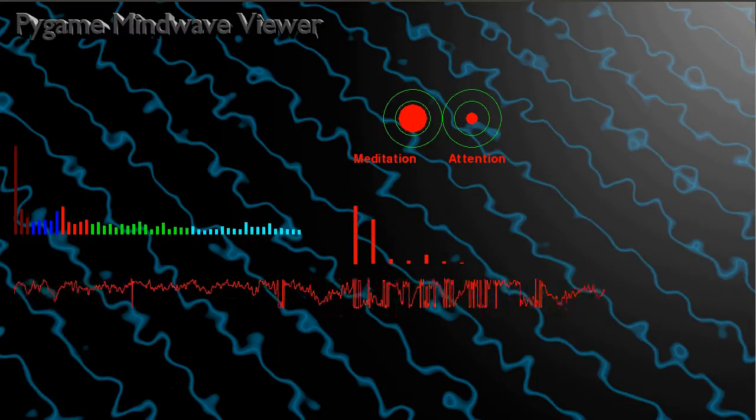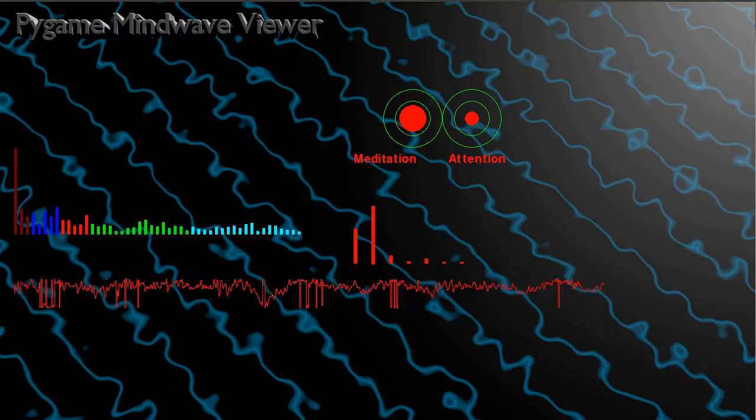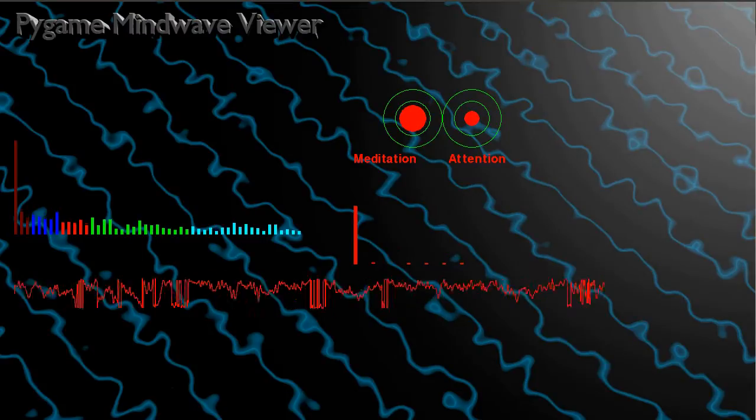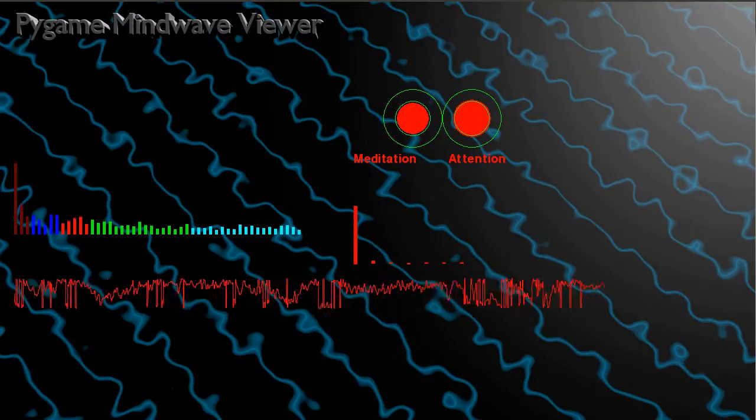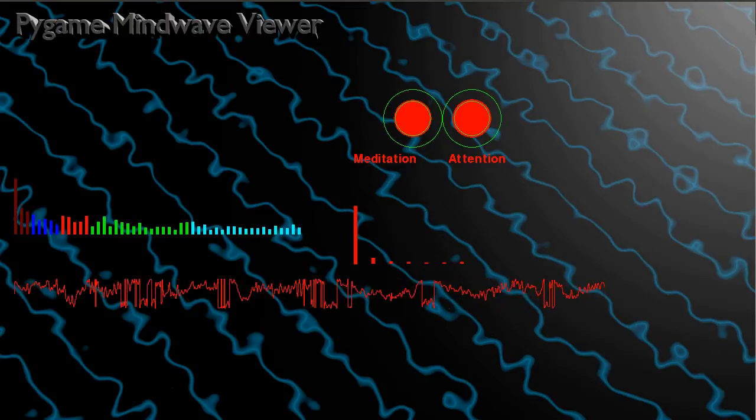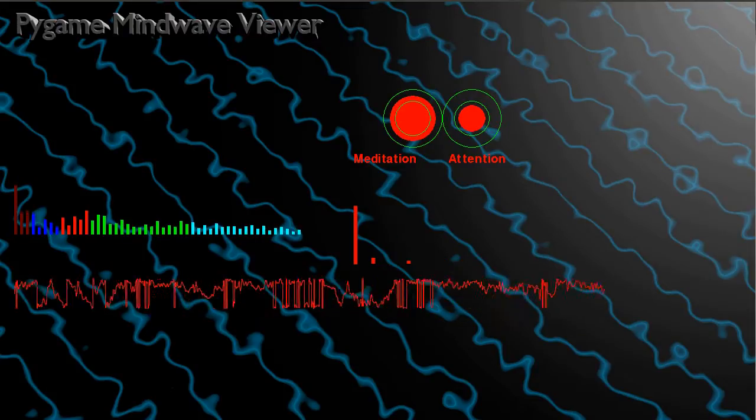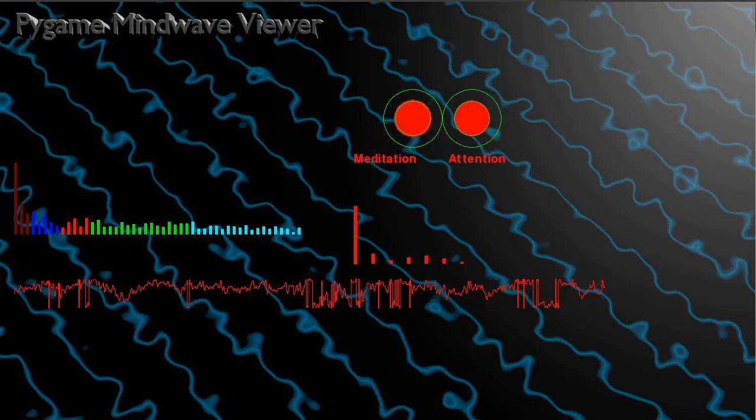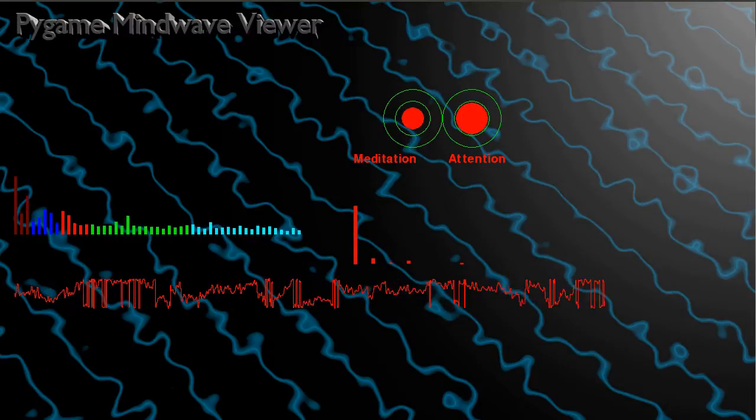One of the problems with EEG recording is that you usually see a lot of artifacts, and especially while I'm talking you might even see that the artifacts are stronger the more I move my lips.